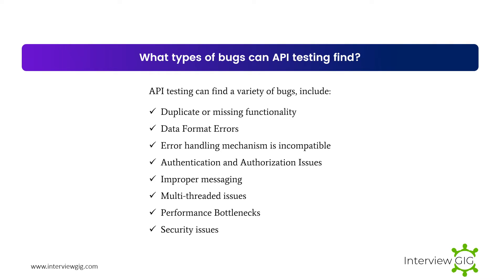What types of bugs can API testing find? API testing can find a variety of bugs including: duplicate or missing functionality, data format errors, error handling mechanism issues, authentication and authorization issues, improper messaging, multi-threaded issues, performance bottlenecks, and security issues.